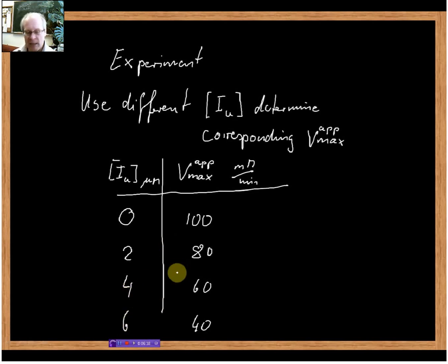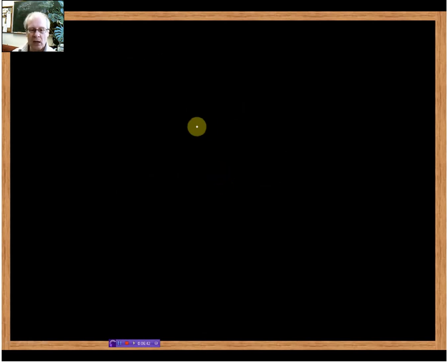How can we determine the dissociation constant in this case? We use a so-called secondary plot, also called a Dixon plot.